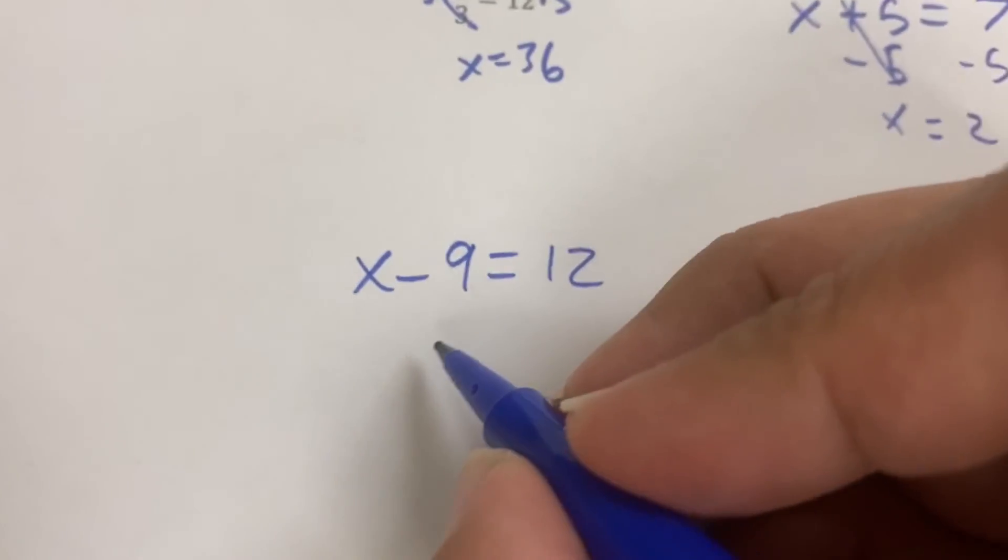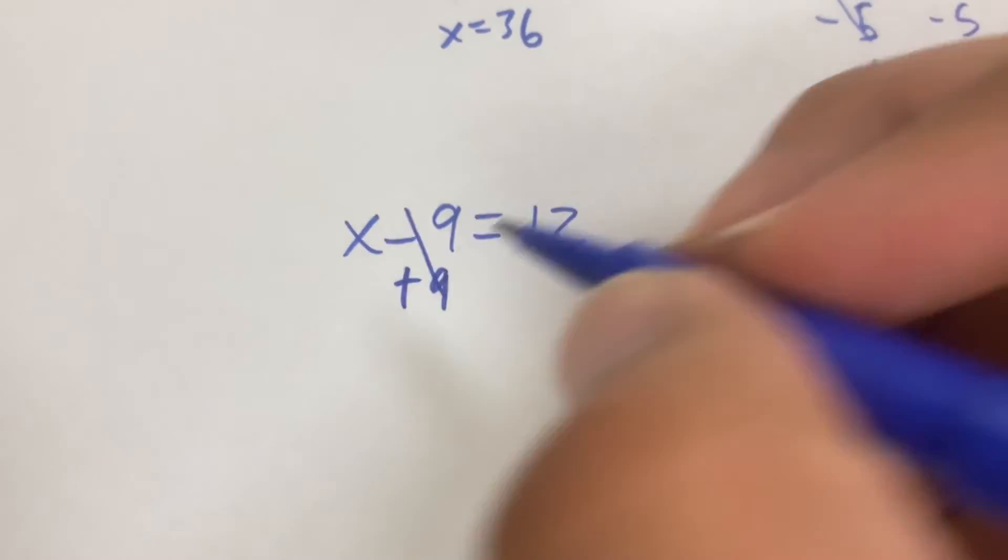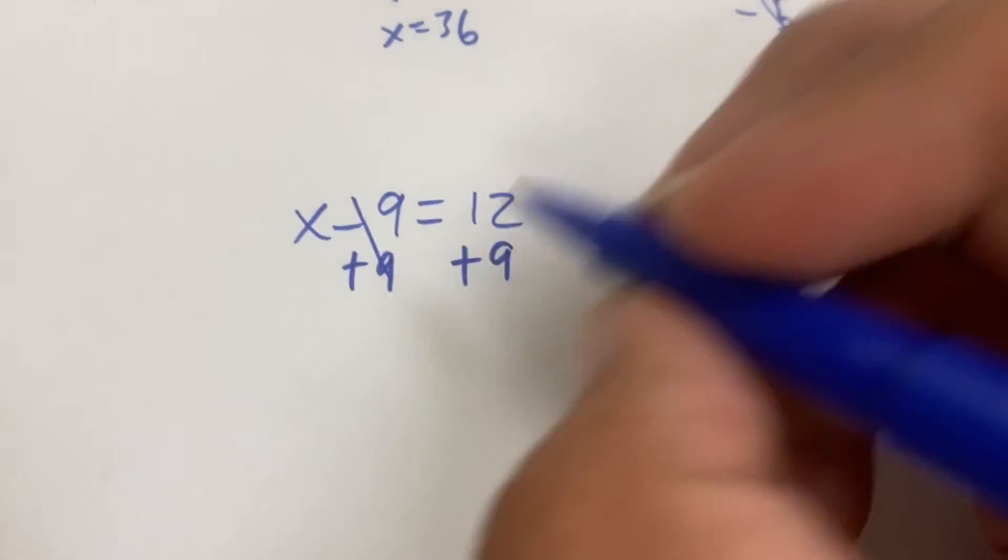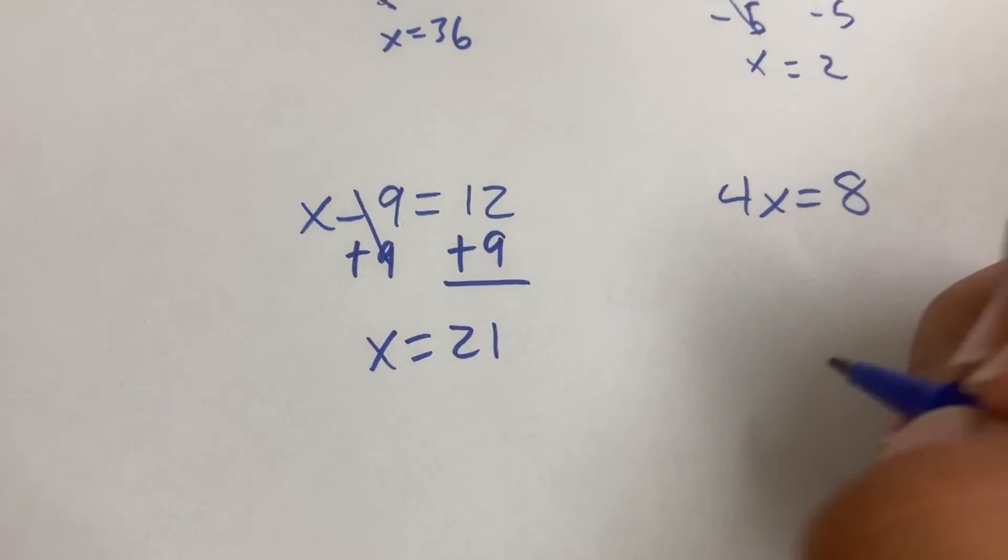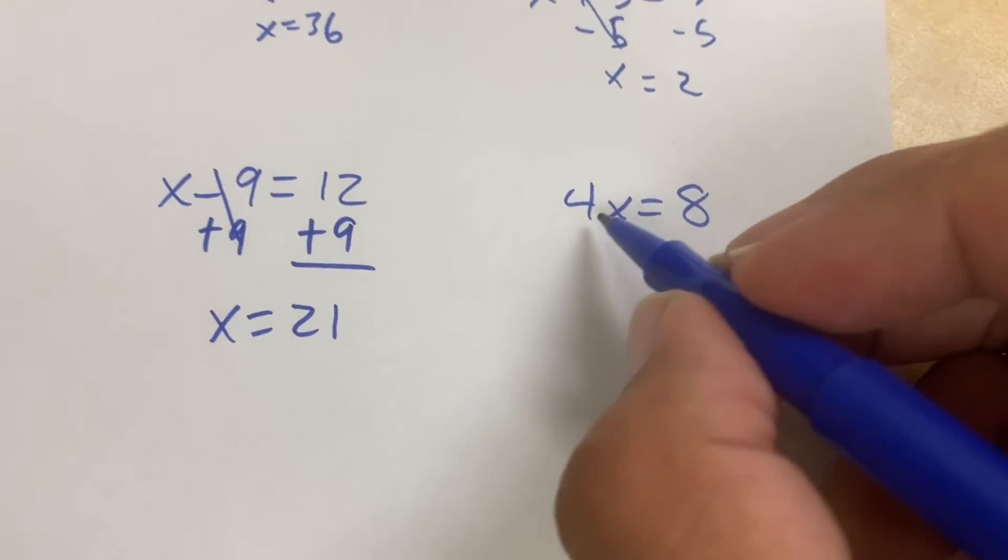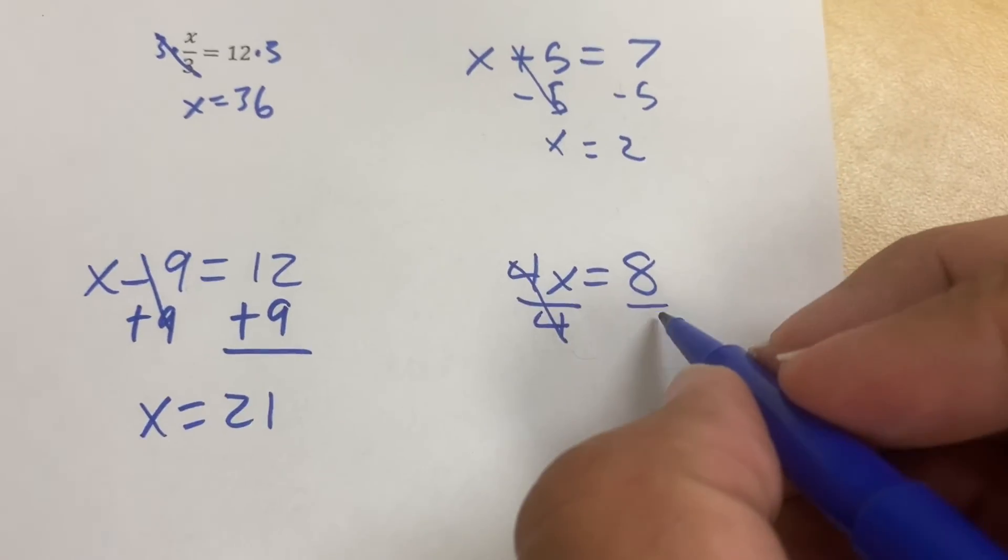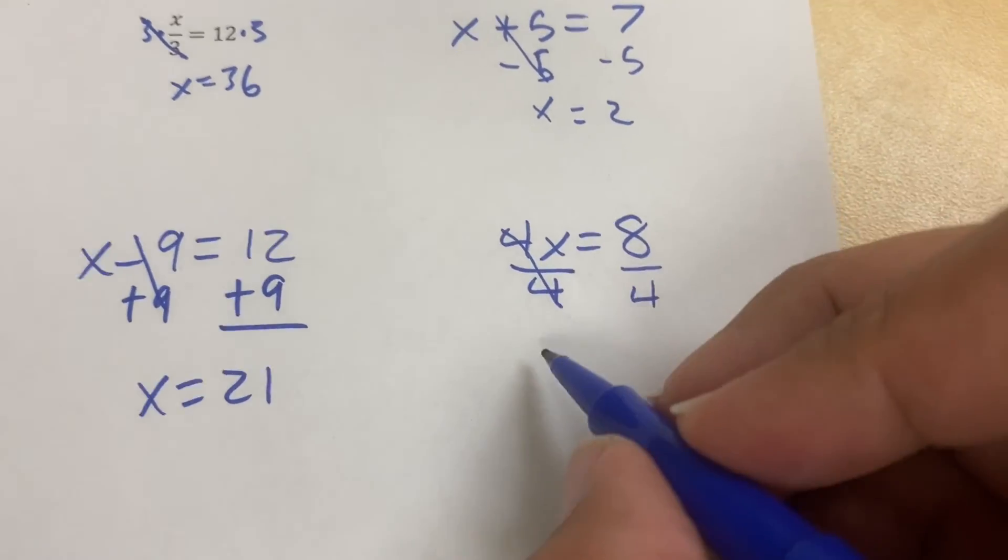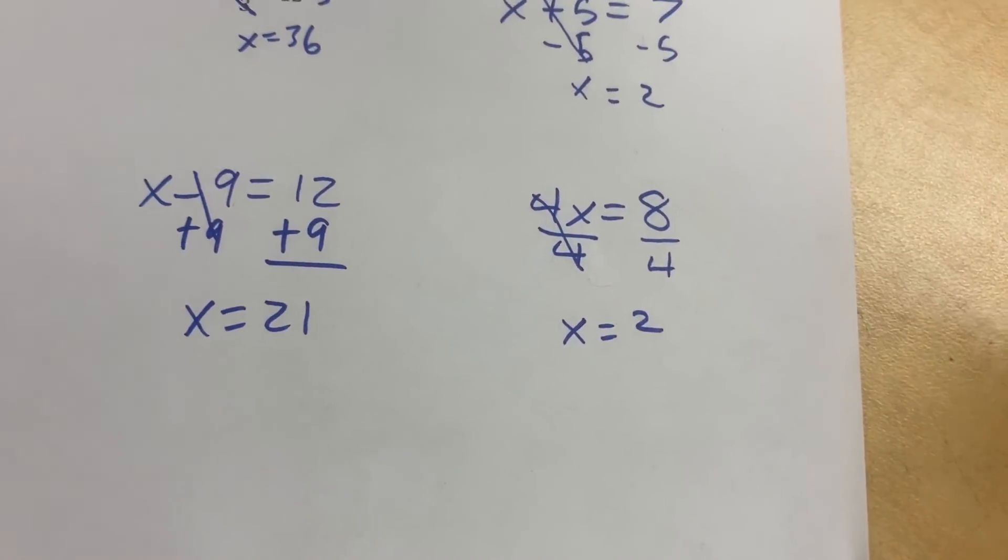It's getting harder to write now. I'm getting lower. So the opposite of minus 9 is plus 9. Plus 9. x is all by itself. This becomes 21. The opposite of multiplying by 4 is dividing by 4. So x equals 2. And that's it.